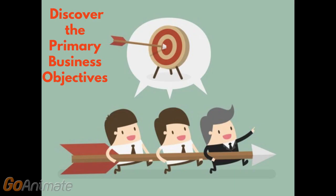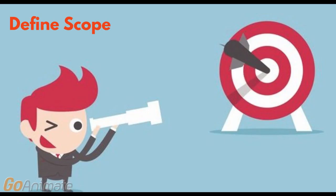Step two: discover the primary business objectives. It's very common for business analysts and project managers to jump right into defining the scope of the project. However, this can lead to unnecessary headaches. Uncovering and getting agreement on the business needs early in a project, and before scope is defined, is the quickest path forward to a successful project.